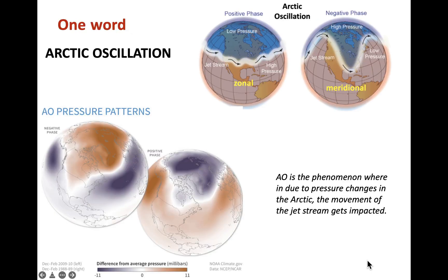In one word, we would like to attribute this ongoing heatwave to something known as the Arctic Oscillation. Before we get into the details — what is Arctic Oscillation? It is a change in the pressure patterns near the Arctic in the Northern Hemisphere.